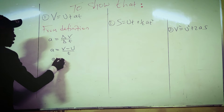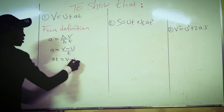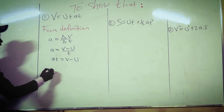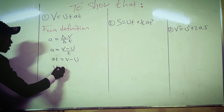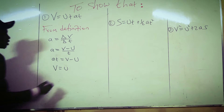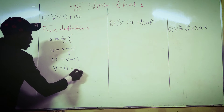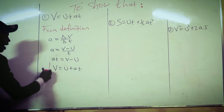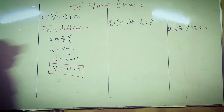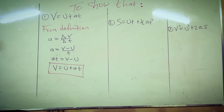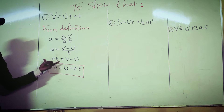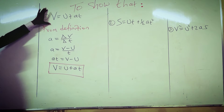If we cross-multiply, then AT equals final velocity minus initial velocity. We bring U to this side, and it becomes V equals U plus AT. Remember, addition has no order — 2 plus 3 is the same as 3 plus 2. So when you bring U to this side it becomes positive, giving us U plus AT. That's the first equation.